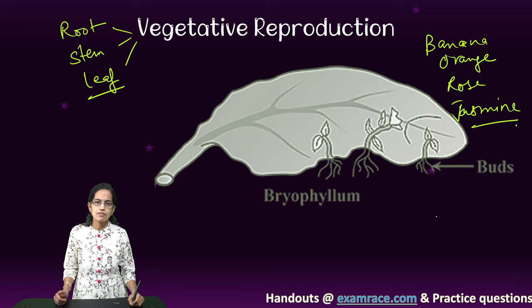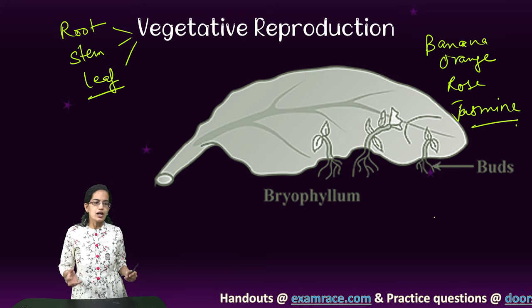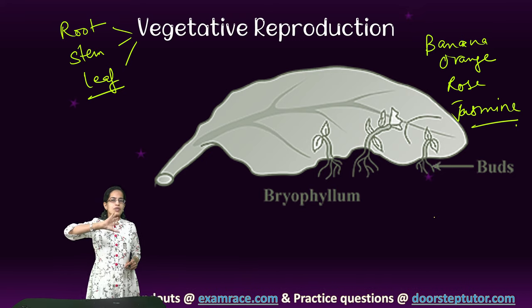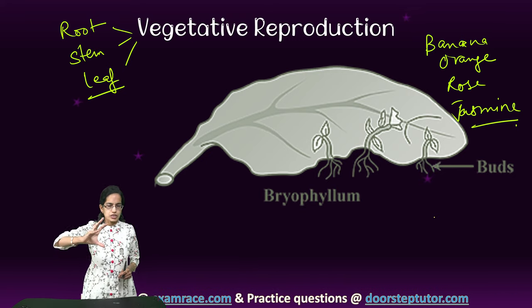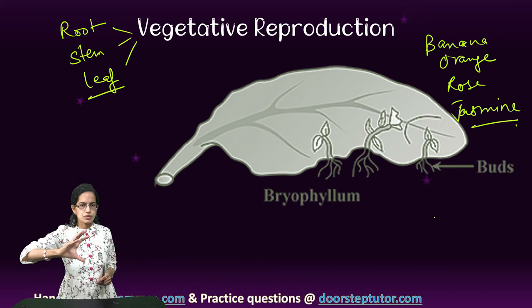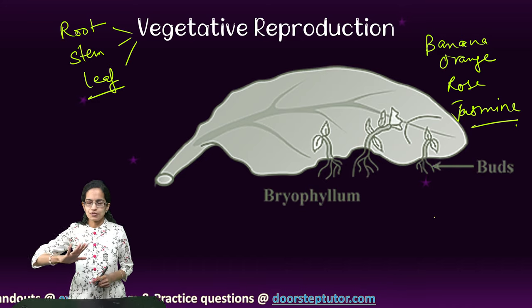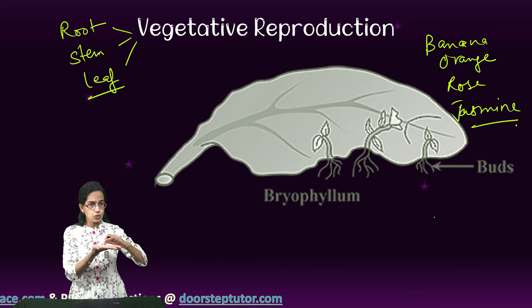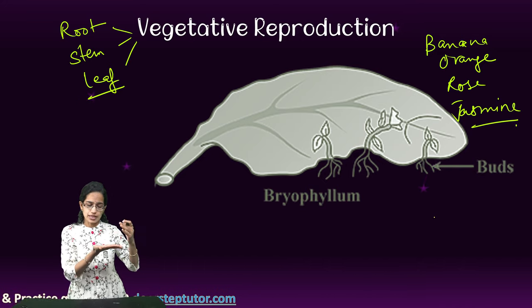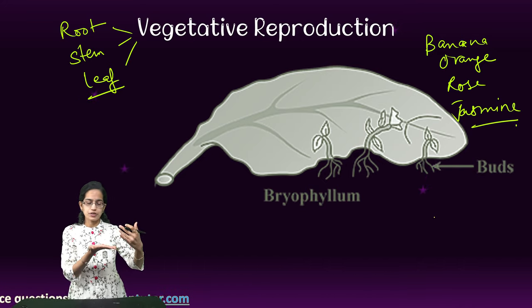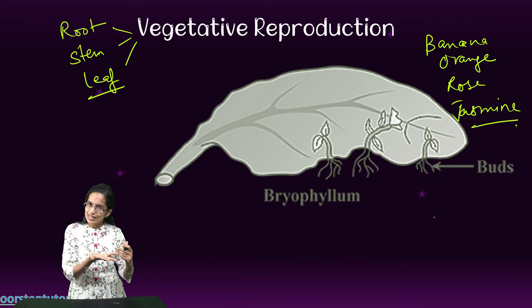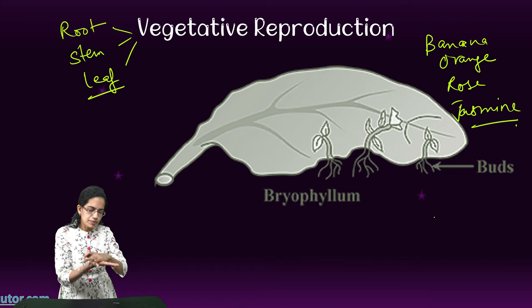Another good example is Begonia. In the process of vegetative reproduction, there is an origin point, but that origin point could be root, stem, or leaf.